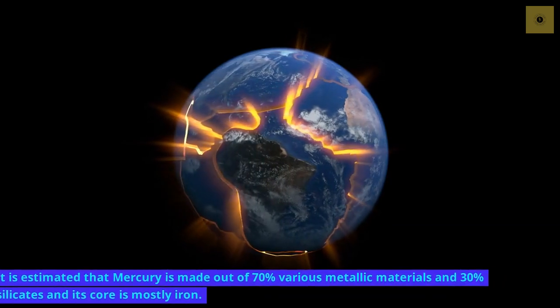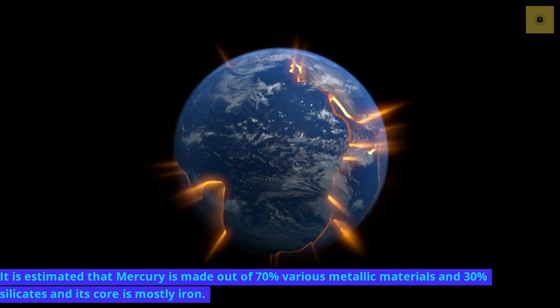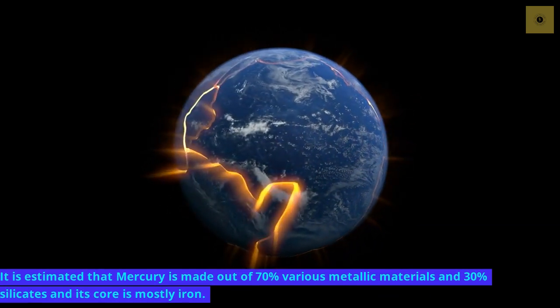It is estimated that Mercury is made out of 70% various metallic materials and 30% silicates, and its core is mostly iron.